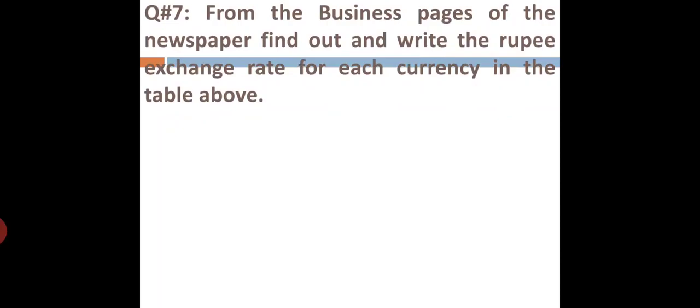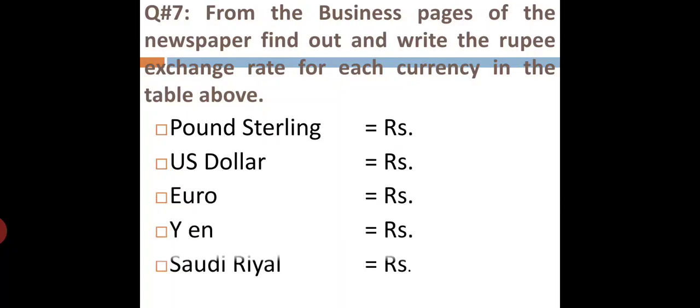In question number seven: From the business pages of the newspaper, find out and write the rupee exchange rate for each currency in the table above. Dear students, you have to do this question by your own and then compare your answers with the answer I'm going to give over here. For pound sterling, 1 to 210 rupees we will get. For US dollar, we have 167.45. For euro, we have 195.18. For yen, 1.58. For Saudi riyal, we will get 44.64.